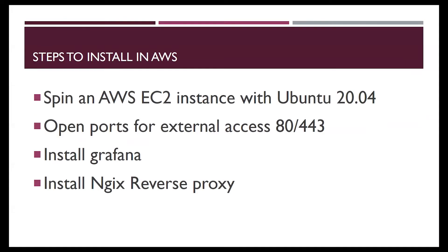The steps to install on AWS: first, we are going to spin up an EC2 instance with Ubuntu 20.04. Then we need to make sure the server is accessible from the web by opening port 80 or 443. Then we will install Grafana, which runs on port 3000. To set up a reverse proxy, we will use Nginx — when you access port 443, it will internally redirect to port 3000.